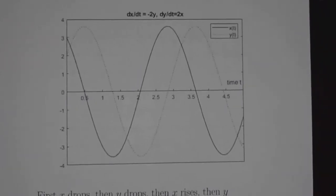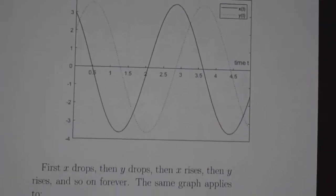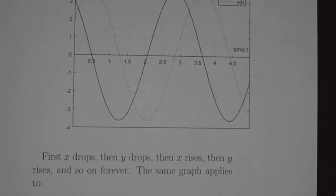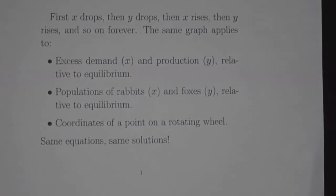Now, is this the graph of the x and y coordinates of a point on a wheel? It could be. Is this a graph of demand and production in an industrial system? It could be, relative to the equilibrium. You can't have negative production, but you can have less production than normal. Is this the excess population of rabbits and foxes in the forest? It could be. It could be any one of these things. The point is that the equations are the same for all three systems and are the same for any kind of system that describes oscillations. Whenever you have this general situation, you're going to wind up with sines and cosines.